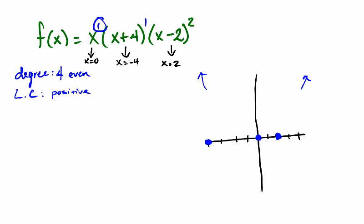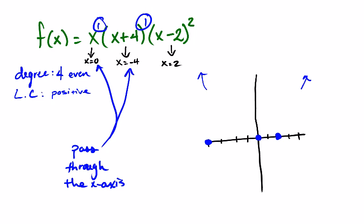Based off of this 1, that's an odd number of times. So if it occurs an odd number of times, I know that this guy will pass through the x-axis. Okay? Same thing here, odd number of times, also pass through the x-axis.